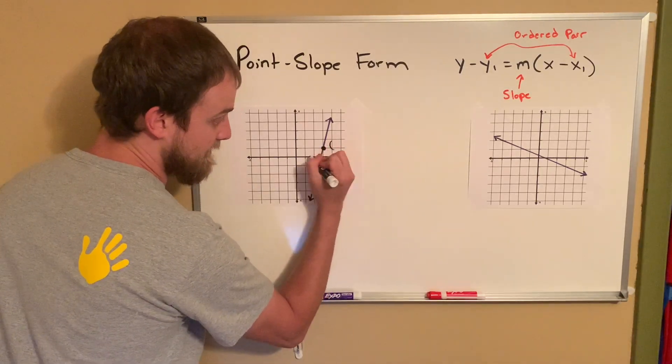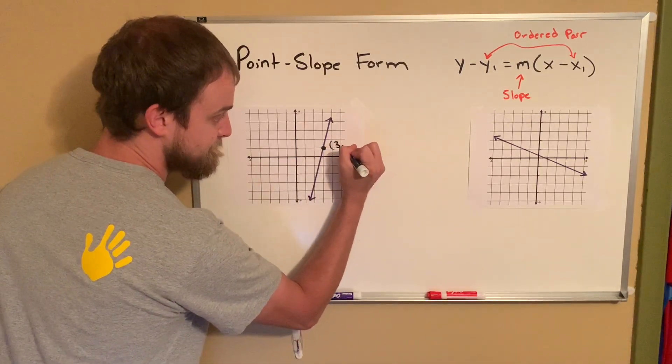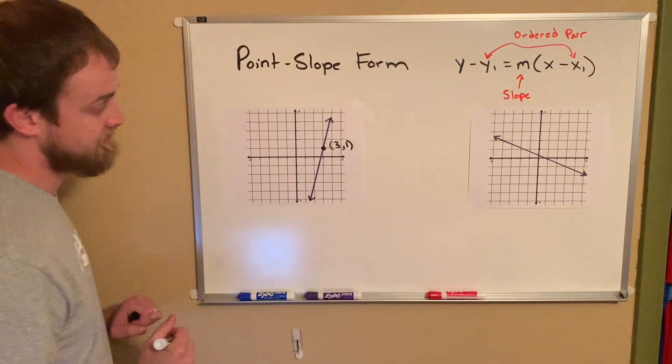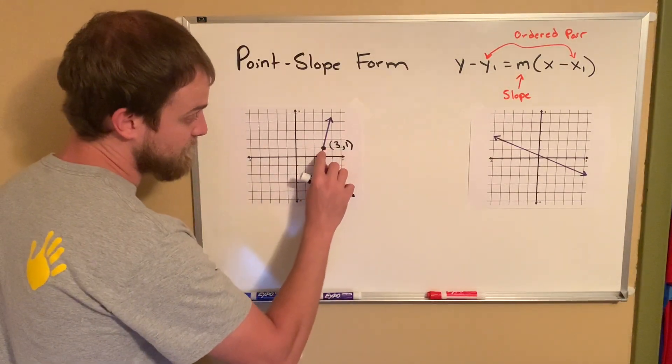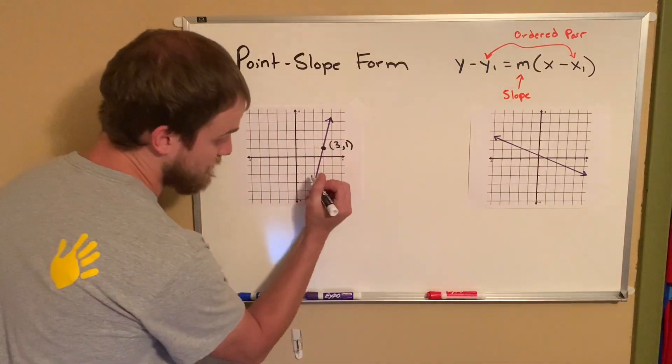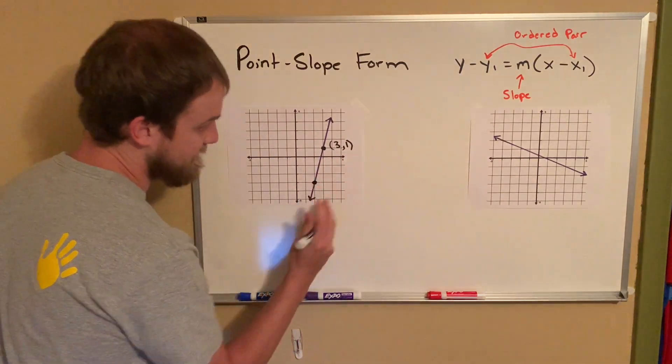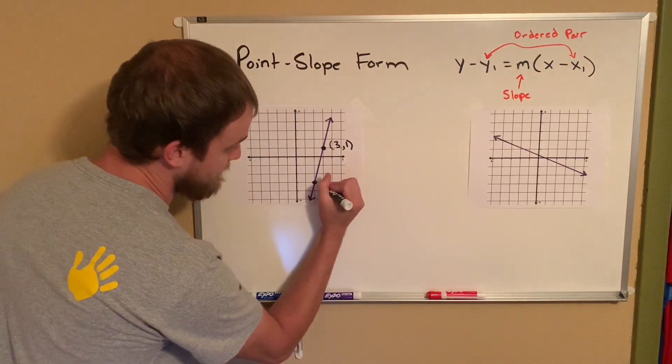And if you look, it actually hits directly there at 3, 1. Now I'm going to have to find the slope here. So let's find another one. Keep traveling, keep traveling. Oh, right here. And that's at the point 2, negative 3.